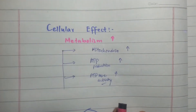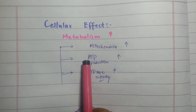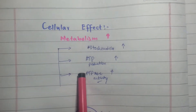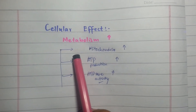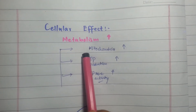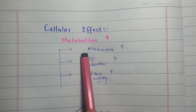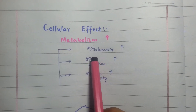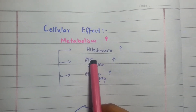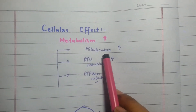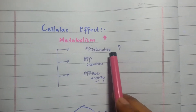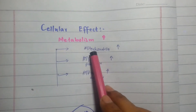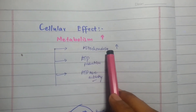First, the cellular effect of the thyroid hormone: the thyroid hormone increases metabolism. Since most metabolic functions are carried out in the mitochondria, increasing metabolism requires increasing the number of mitochondria. The thyroid hormone plays a key role in increasing the mitochondrial number.